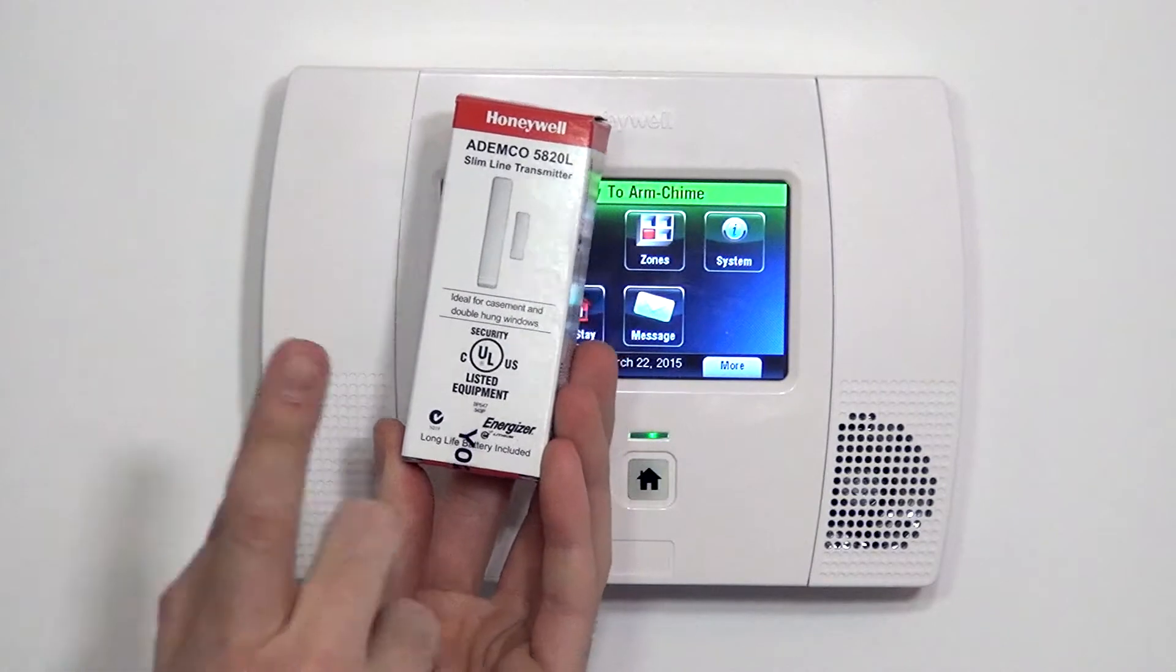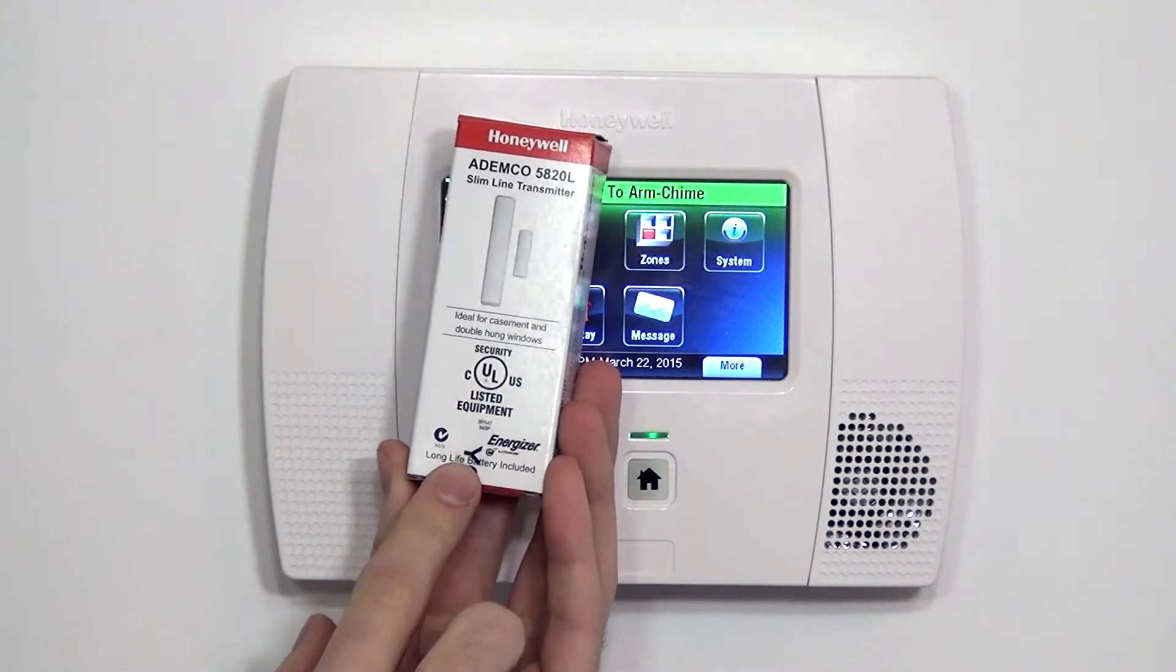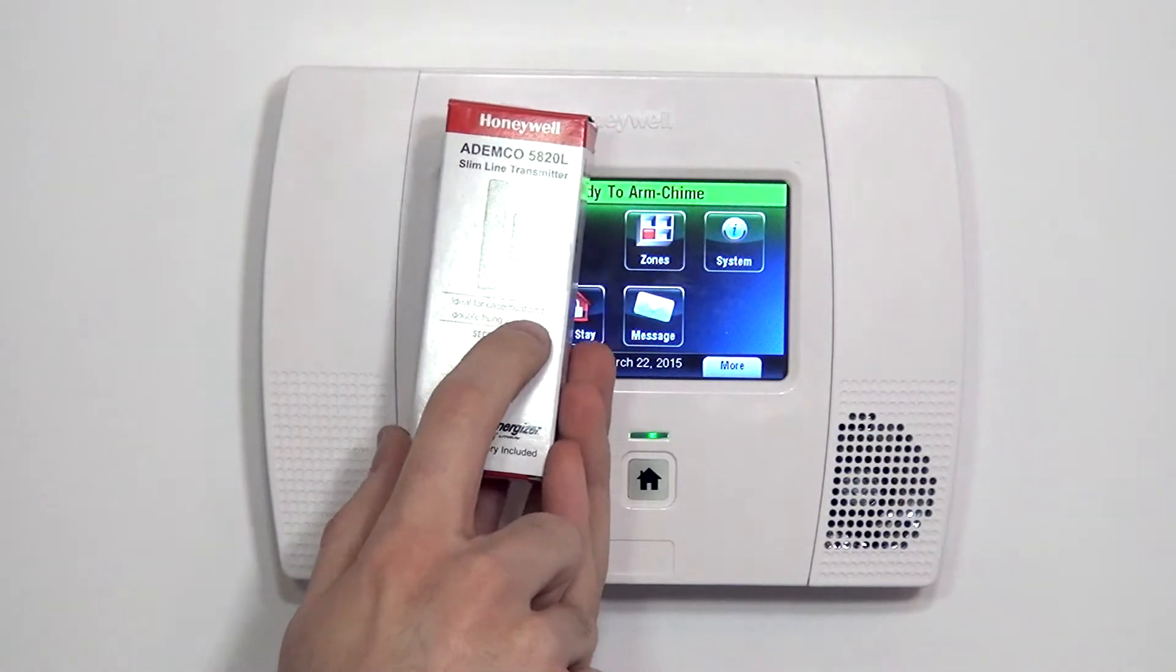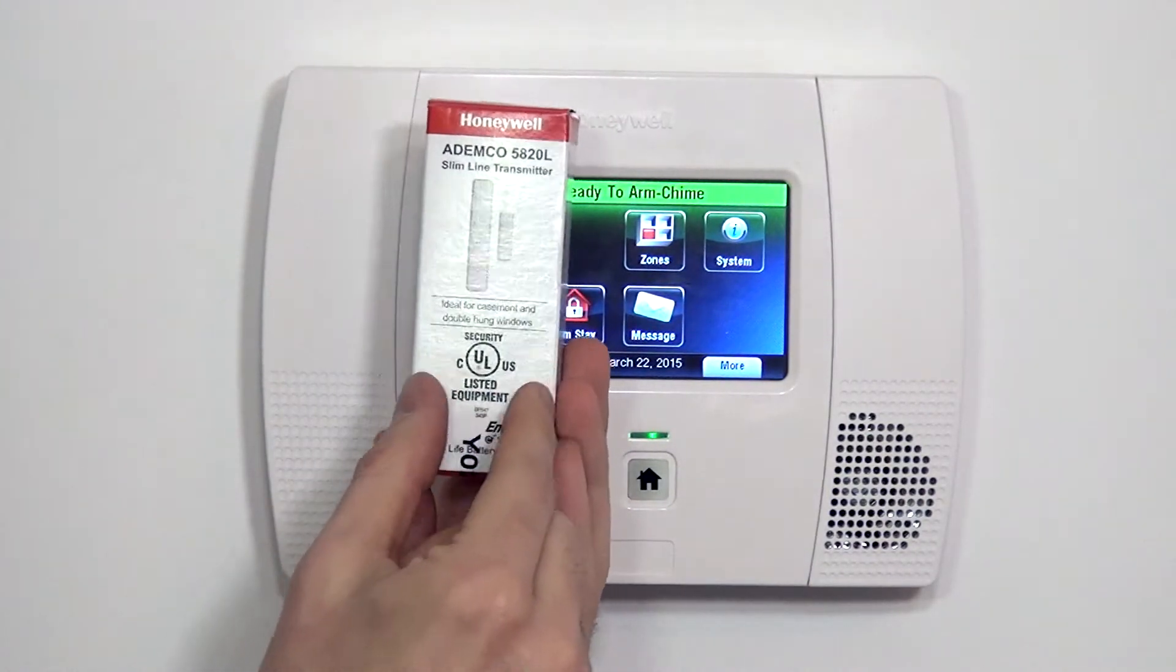The 5820L is a door or window contact. It can be used on any opening. It's ideal for casement and double-hung windows, which might have a skinnier frame.